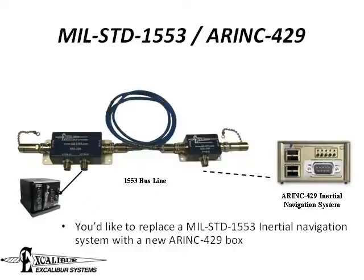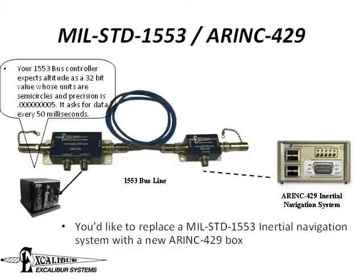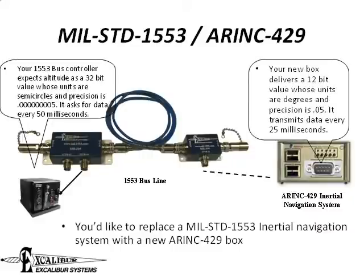Your 1553 bus controller expects to receive the altitude information as a 32-bit value whose units are semicircles with a precision of five billionths of a semicircle. The BC asks for data every 50 milliseconds. Your new box delivers a 12-bit value whose units are degrees and precision is 0.05, and it transmits data every 25 milliseconds.